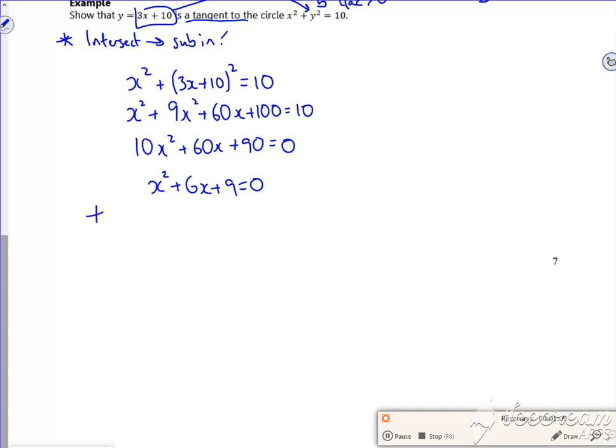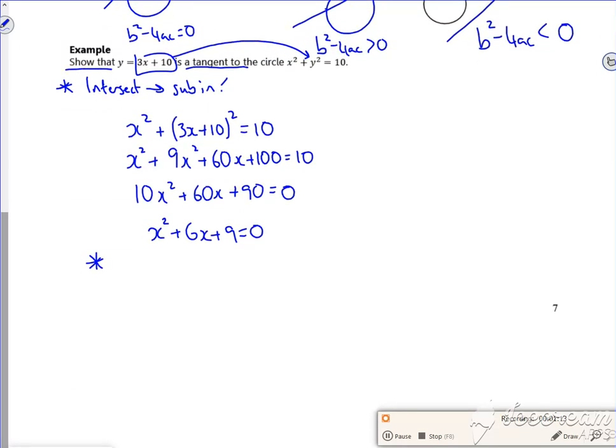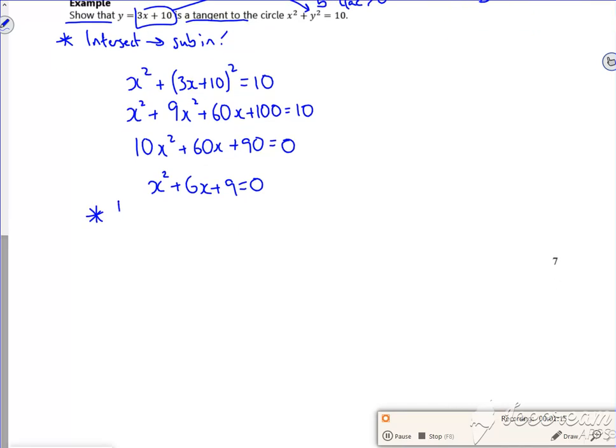So now I'm going to look at the b squared minus 4ac rating. So I want to show that it's a tangent. So it's a tangent if b squared minus 4ac is equal to zero.